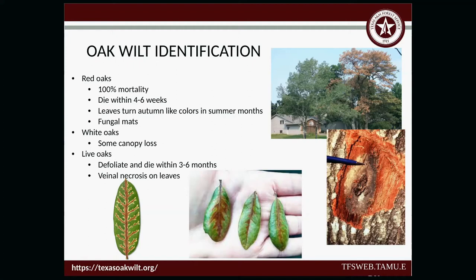Question: If the fungus goes away when the tree dies because it has to feed on something living, is that correct? For red oaks, the fungus can still live in the tree depending on the time of year the oak wilt killed the tree. If your tree died right now from oak wilt, it probably will not create fungal mats next spring. But if your tree dies later this fall from oak wilt, then it can produce those fungal mats in the spring. It's not an exact science — there are a lot of factors.